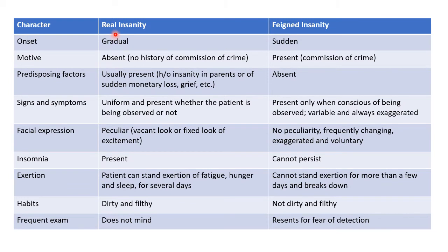Now let us see the differences between real insanity and faint insanity. The onset in real insanity will be gradual, whereas the onset in faint insanity will be sudden. Motive will be absent in real insanity — that is, there won't be any history of commission of crime — whereas in faint insanity, motive will be present, meaning there will be a history of commission of crime.